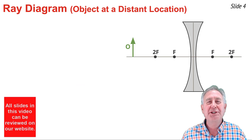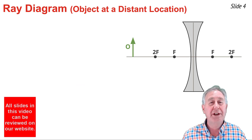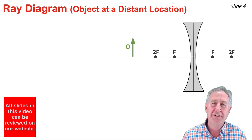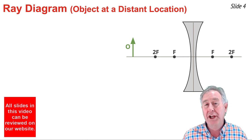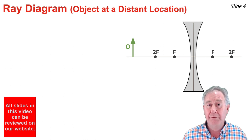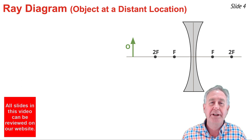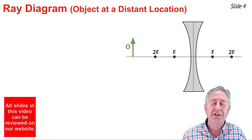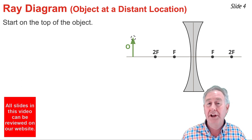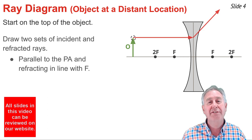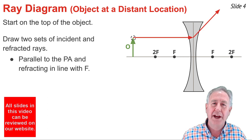A ray diagram is a conceptual tool that shows how a lens refracts light in order to produce an image of an object. Here I will be drawing a ray diagram for an object placed a considerable distance from a diverging lens. The first step is to pick a point on the top of the object and from that point draw two sets of incident and refracted rays.